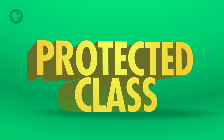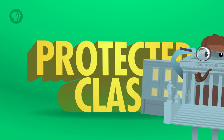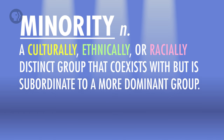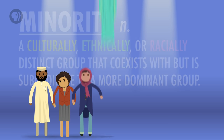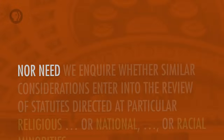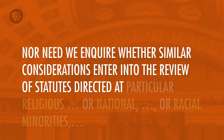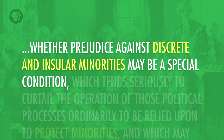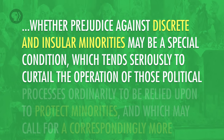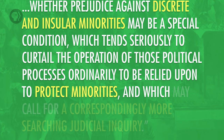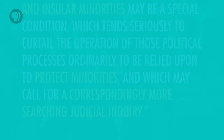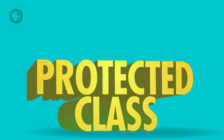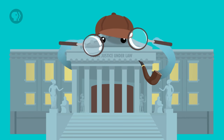When state law or executive action mentions a protected class, the Supreme Court will almost automatically become suspicious. Protected classes are broadly what we might think of as minorities. The court defined protected classes in one of the most important footnotes in their jurisprudence: 'Nor need we inquire whether similar considerations enter into the review of statutes directed at particular religious or national or racial minorities, whether prejudice against discrete and insular minorities may be a special condition which tends seriously to curtail the operation of those political processes ordinarily to be relied upon to protect minorities, and which may call for a correspondingly more searching judicial inquiry.' When a statute deals with discrete and insular minorities, such as religious, national, or racial minorities, it's automatically suspect, and the courts are going to look at it closely.